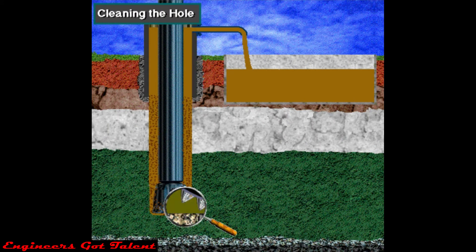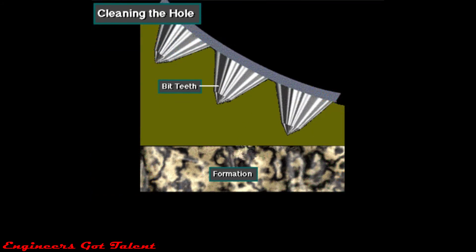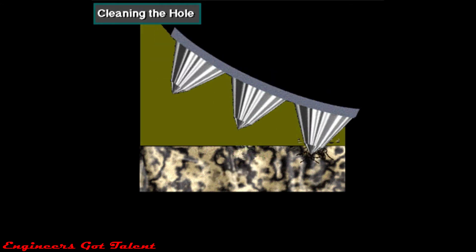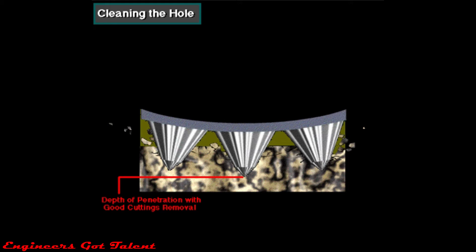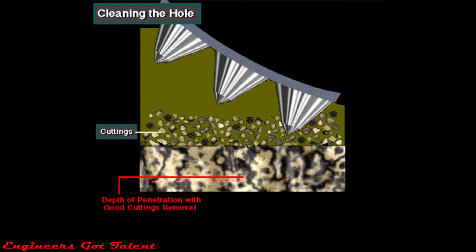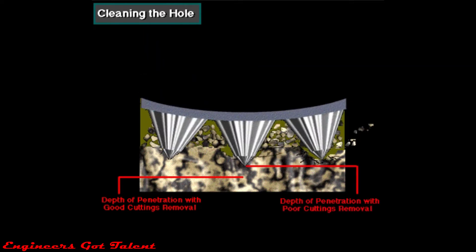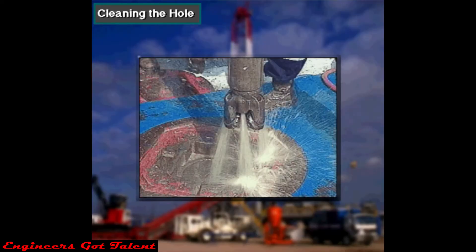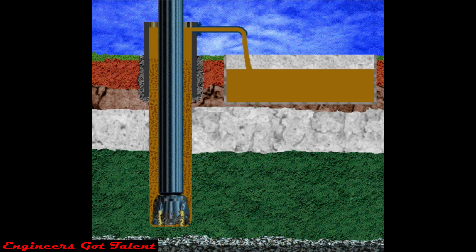One function of mud is to clean the hole. A clean hole allows the bit to drill into uncut formation rock. Here's an example of what can happen when cuttings are not removed off-bottom. Mud jets out of the bit and moves cuttings away from the bottom of the hole. The mud then carries the cuttings up the annulus and to the surface for disposal.